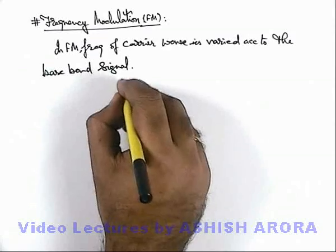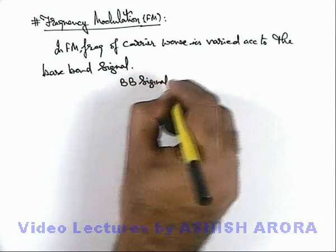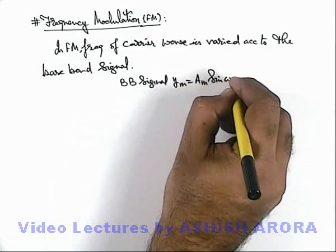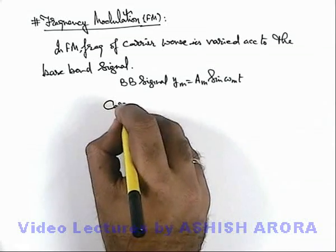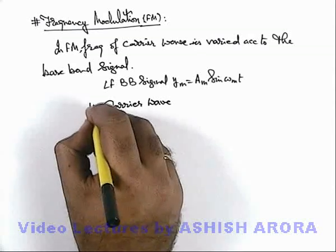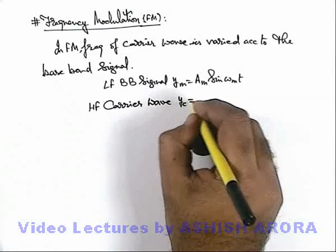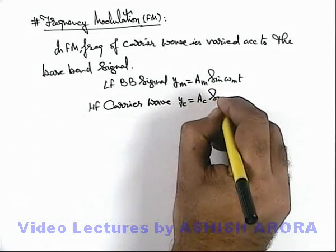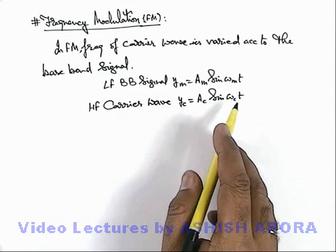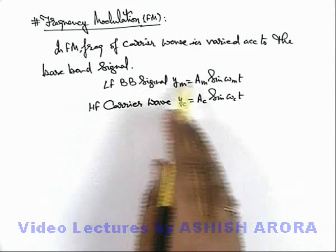Here, if we have a baseband signal or modulating signal given as y_m equals A_m sine of omega_m times t, and we are given a high frequency carrier wave — we know the baseband signal is a low frequency signal and carrier wave is high frequency — given as y_c equals A_c sine of omega_c times t. In amplitude modulation, the amplitude of the carrier wave was modulated by mixing with the baseband signal.